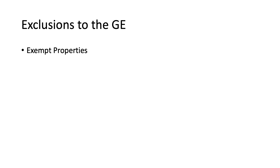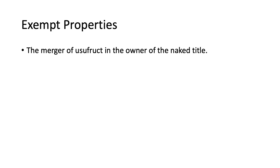What are the properties excluded from the gross estate? There are exempt properties and excluded properties. An example of exempt property is the merger of the usufruct in the owner of the naked title. To illustrate: the decedent may be a usufructuary or maybe the owner of the naked title, and upon his death the usufruct and naked title will merge. That transfer is exempted from the gross estate.